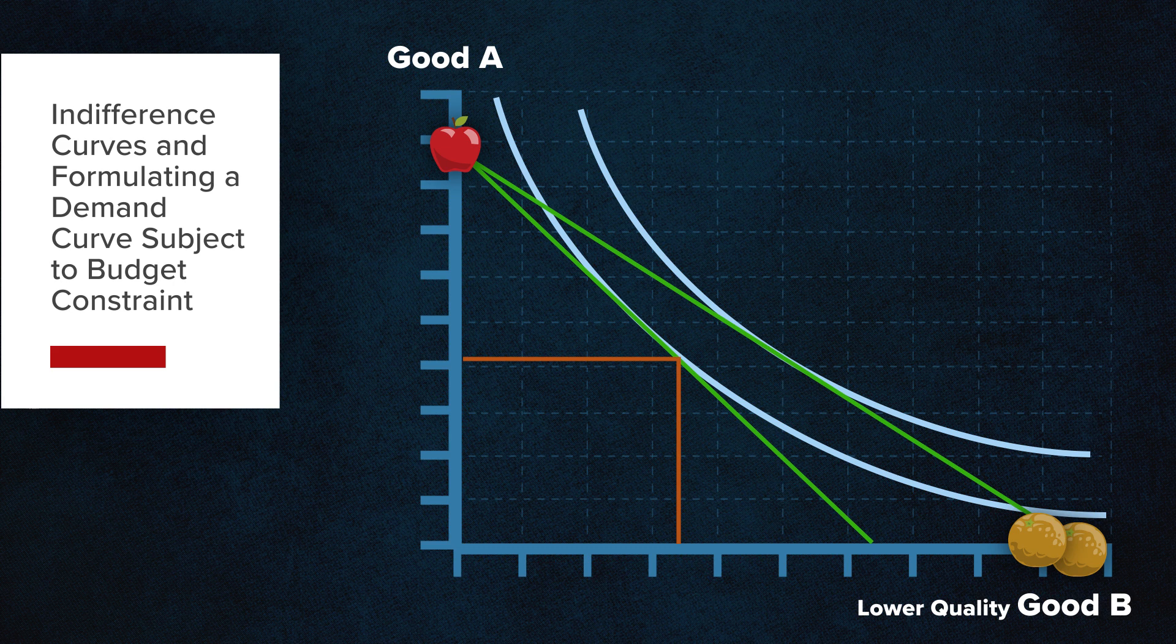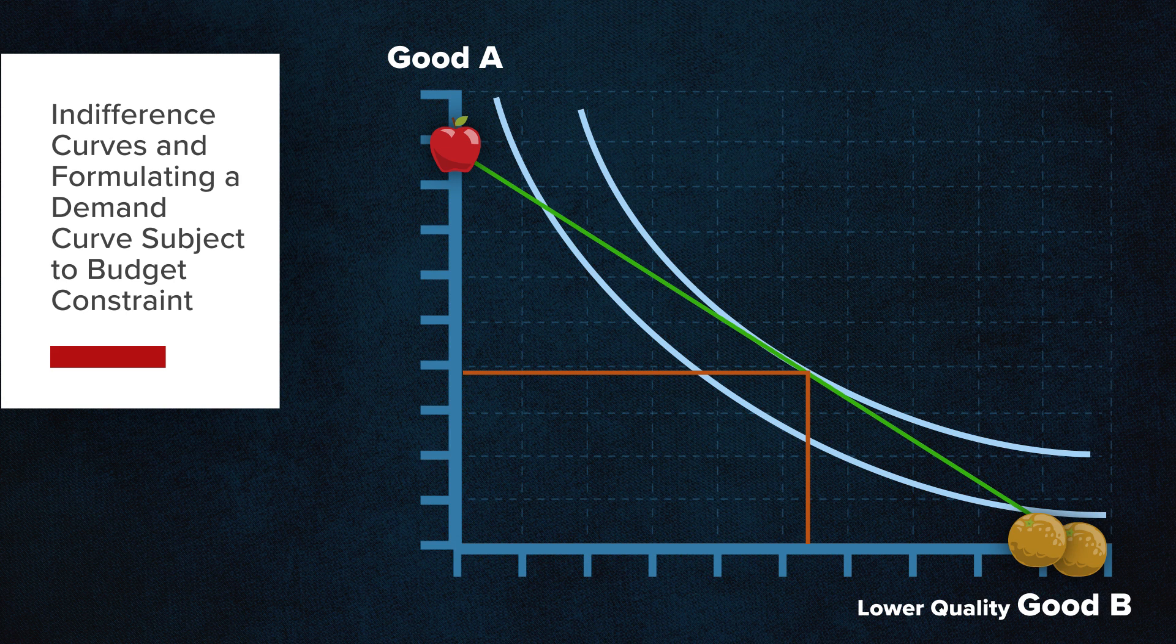The additional indifference curves express the different combinations of goods A and B that yield greater levels of consumer satisfaction or utility at the same restricted income.